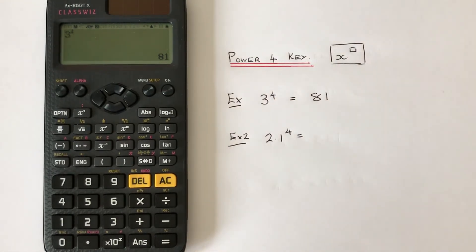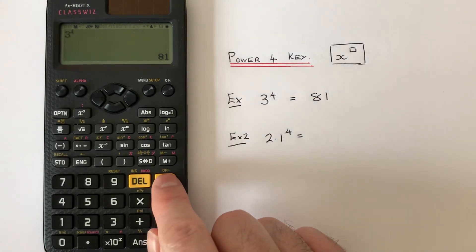Let's have a look at a harder example. This time we've got a decimal: 2.1 to the power of 4. First, press AC.